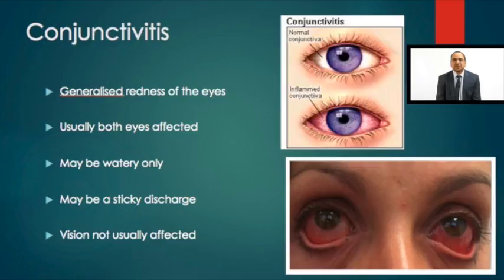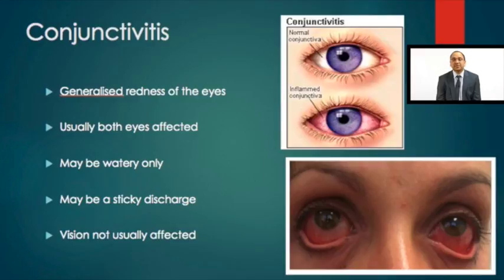This slide illustrates the way the eye looks when somebody is affected by conjunctivitis. The redness tends to be in both eyes — it tends to be a generalized redness across all of the eye — and there may be a discharge, so the eyes may be watering more than usual. There may also be stickiness; the discharge might be like pus and be sticky. Generally there is either no or little effect on vision, and it doesn't tend to be painful, though it can be uncomfortable and irritable.